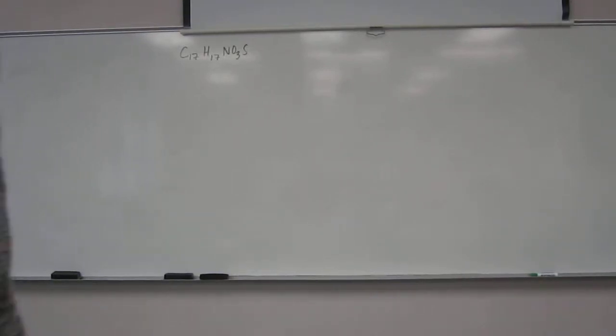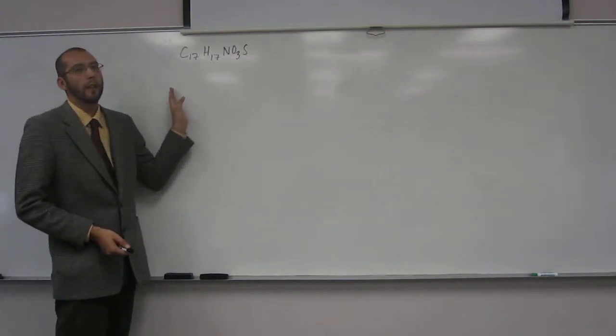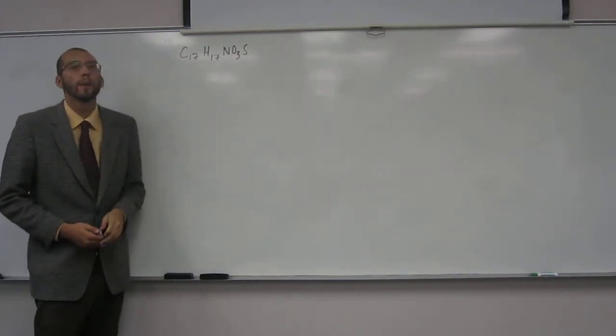So let's try this one yet again. It says calculate the units of unsaturation for protogenic acid, an anti-inflammatory medication. And then it gives its molecular formula as C17H17NO3S.